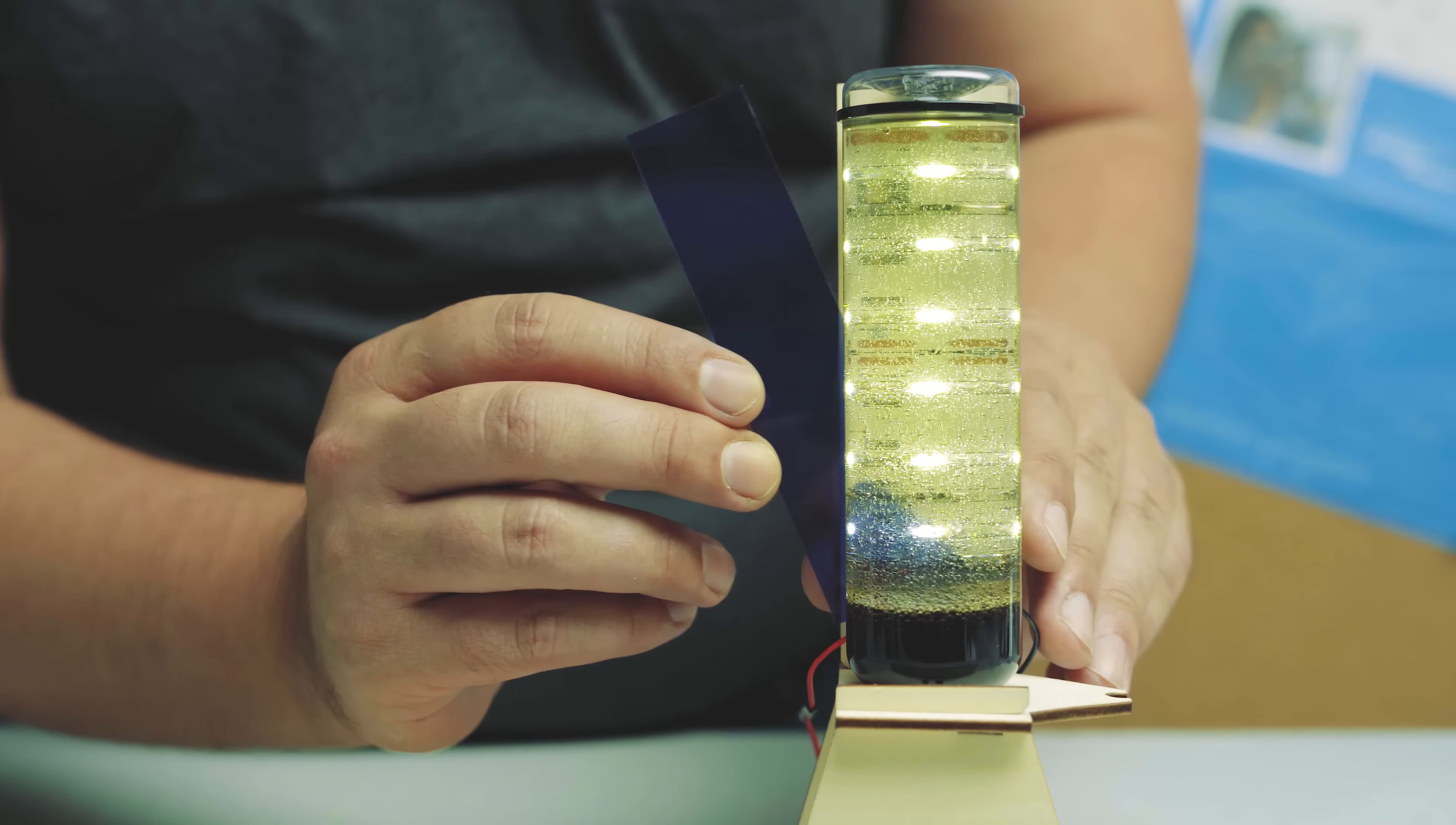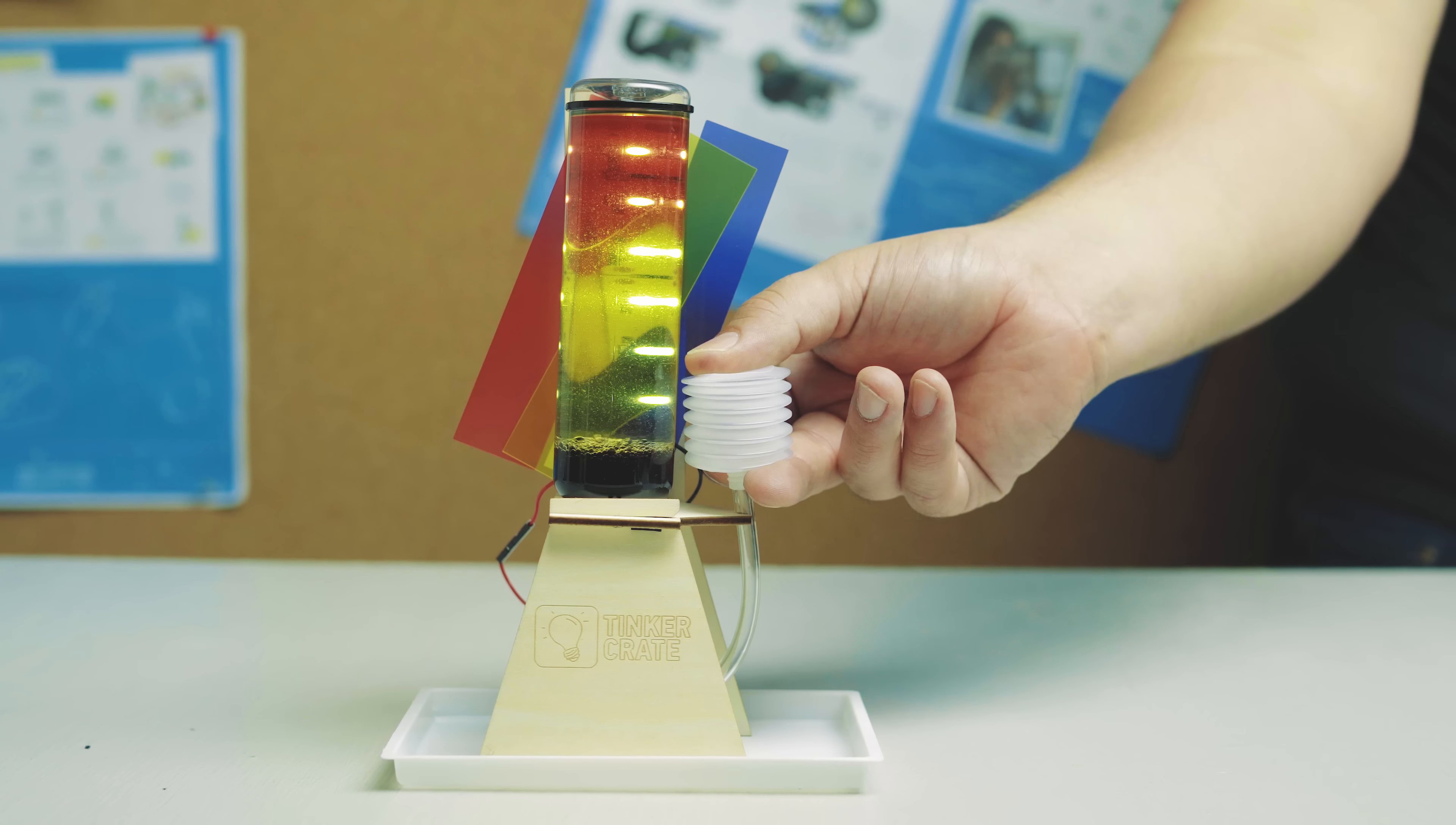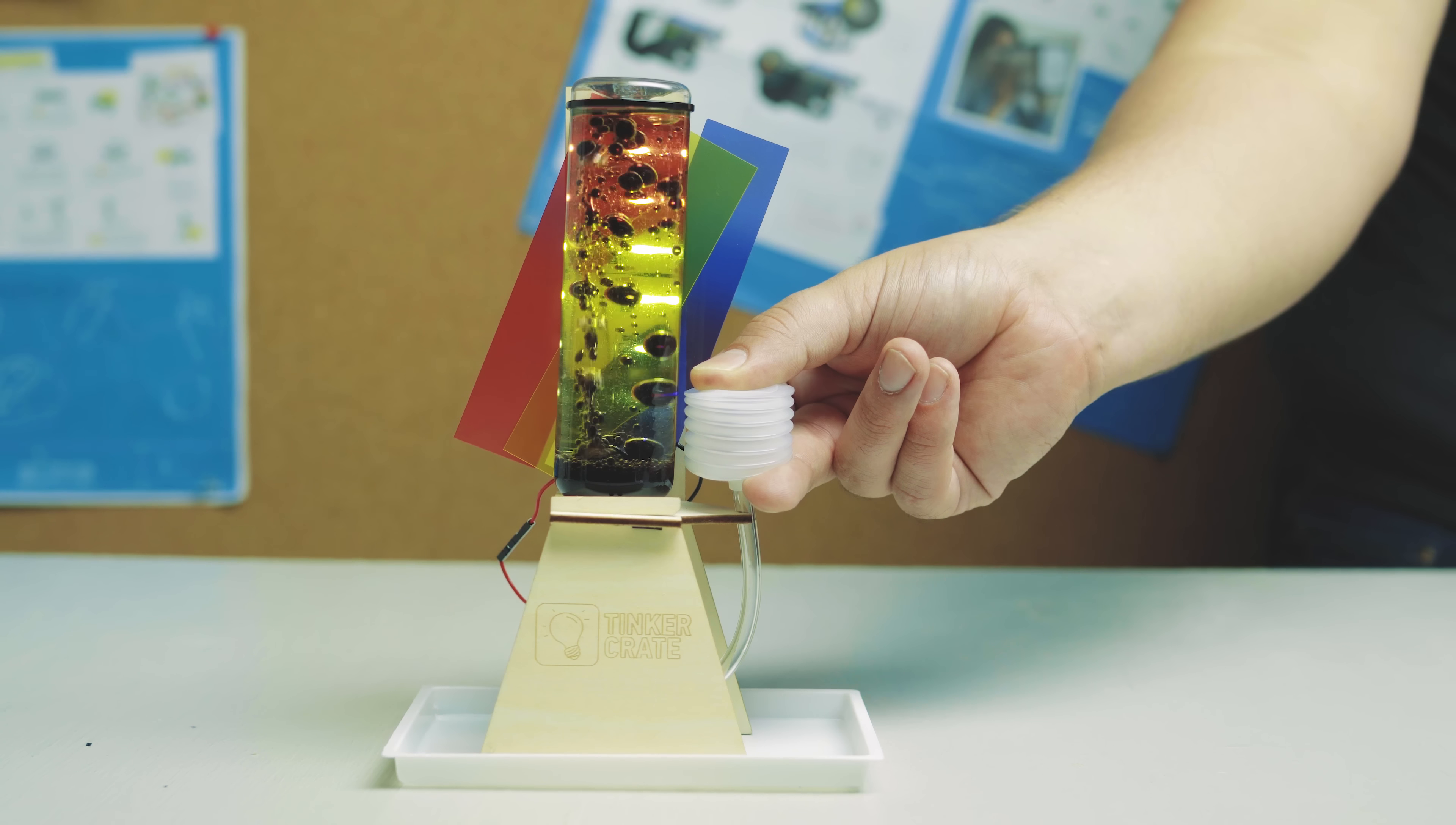To change the color of your lamp, slide a film strip between the bottle and the LEDs. If you want, you can also mix and match them to get changing colors.